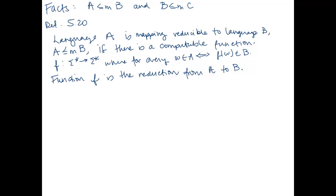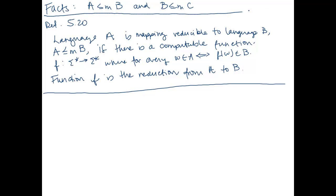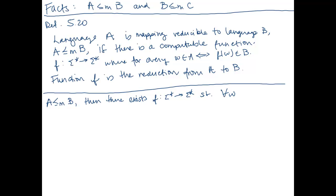Let's go back to our facts and box off the definition we're going to use. By fact 1, A is mapping reducible to B. Then there exists a function F which maps Σ* to Σ*, such that for all W: W in A implies F of W in B.